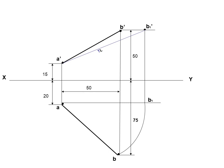Join a'b1' and measure which is the true length. Measure the true inclination of line a'b1' with XY and note down the value theta equal to 24 degrees. Also note down the front view angle with HP as alpha.